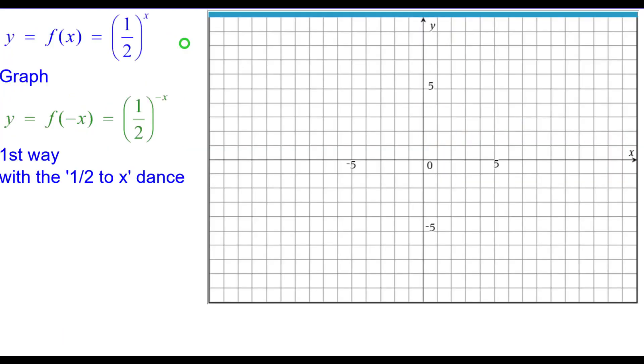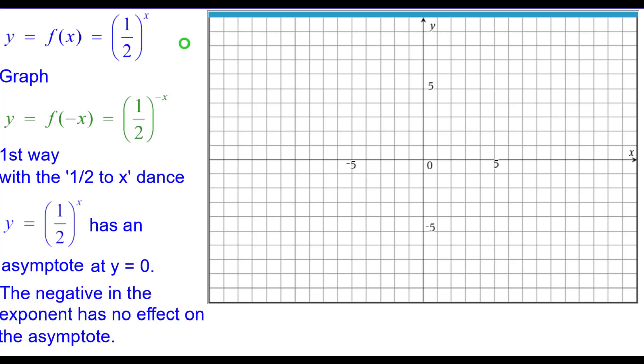The first way is with the 1 half to the x dance. Recall that y equals 1 half raised to the x has an asymptote at y equals 0. And the negative in the exponent has no effect on the asymptote. So we'll graph the x-axis of the line y equals 0 as our boundary line.